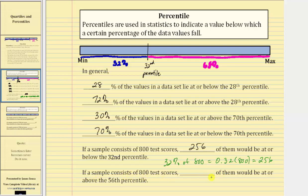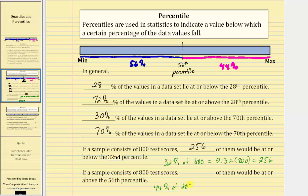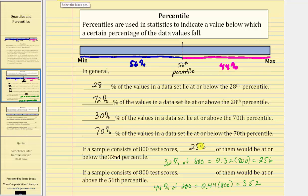If a sample consists of 800 tests, how many of the tests would be at or above the 56th percentile? The 56th percentile would be approximately here, where 56% of the data values — these data values here — are at or below the 56th percentile, which means 44% of the data values are at or above the 56th percentile. That is 44% of 800, equal to 0.44 times 800, which is 352. So 352 of the 800 test scores would be at or above the 56th percentile.